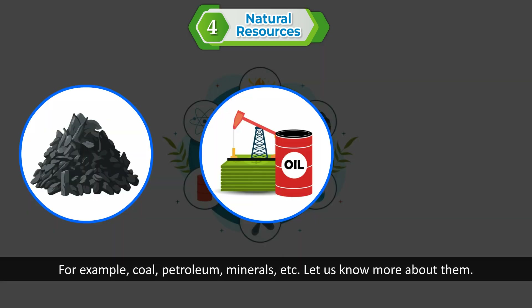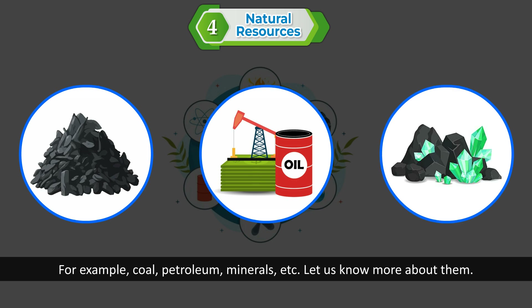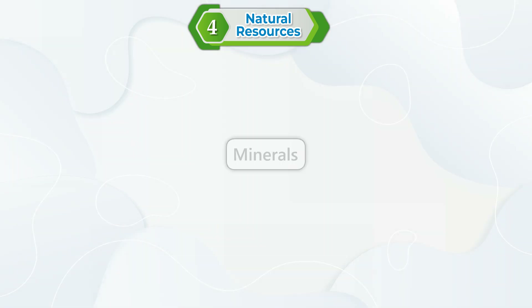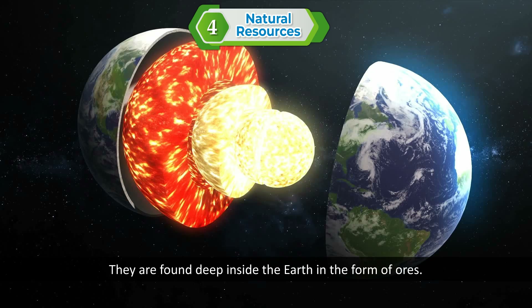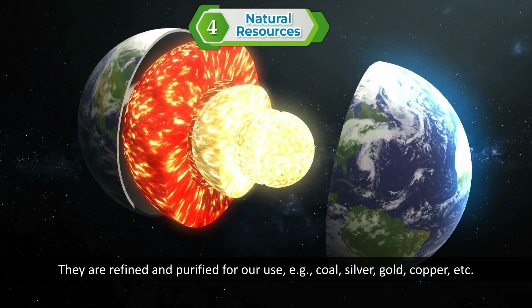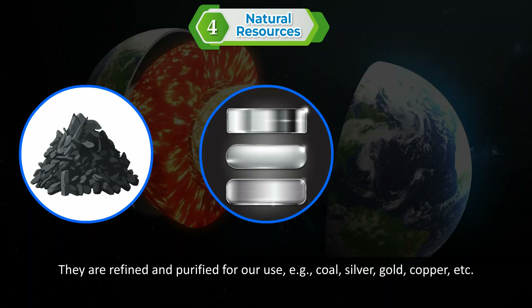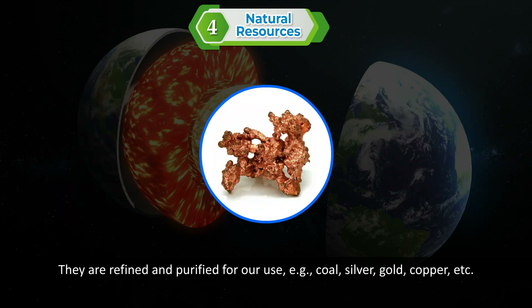Non-renewable resources are those resources that are available in small quantity on the earth. Once used up, they get finished. They are also called exhaustible resources. For example, coal, petroleum, minerals, etc. Minerals are found deep inside the earth in the form of ores. They are refined and purified for our use. Examples include coal, silver, gold, copper, etc. They are millions of years old.